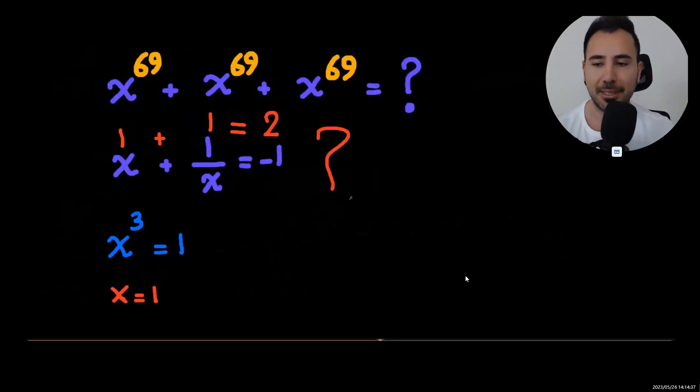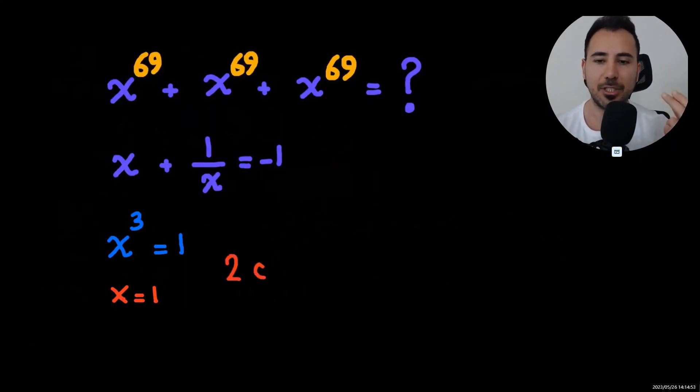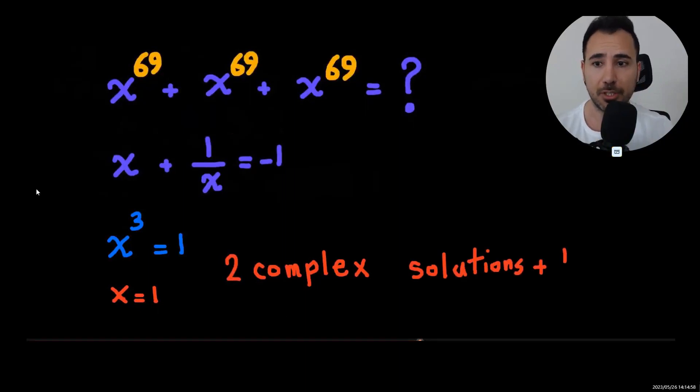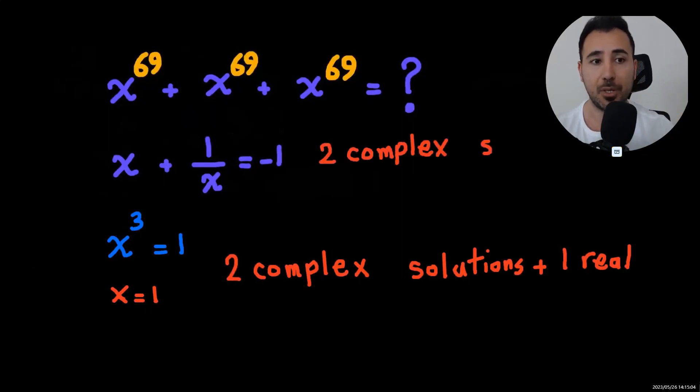Isn't that weird? Not so much. Listen to me. This one, x cubed equals one, has three solutions: one of them is real, which is one, and it has two complex solutions.